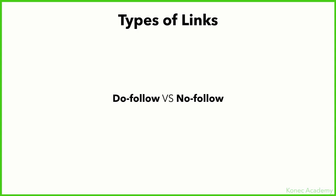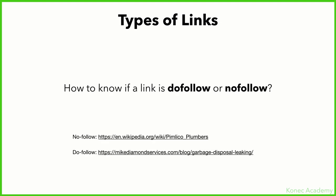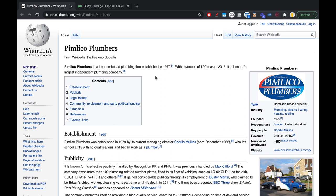On a no-follow link, they don't count as ranking points, but they can help generate traffic and authority. Links from Wikipedia and Facebook are no-follow, but they're still important. It's good to have a mixture of do-follow and no-follow links so Google realizes you're not trying to manipulate the search algorithm. Your link building profile should look natural. Many authoritative sites like Wikipedia, Instagram, and Facebook are all no-follow, but they're still very powerful.